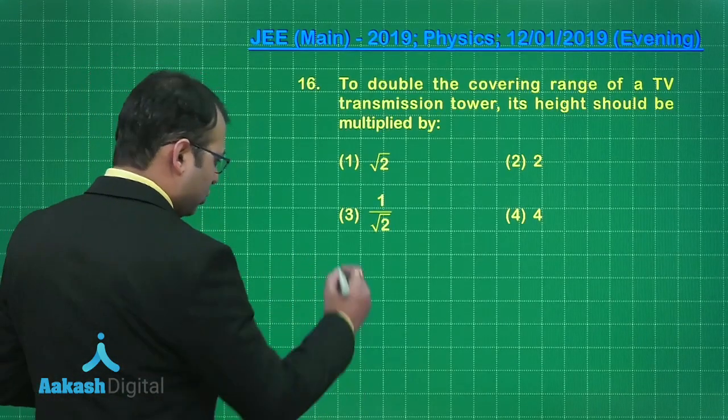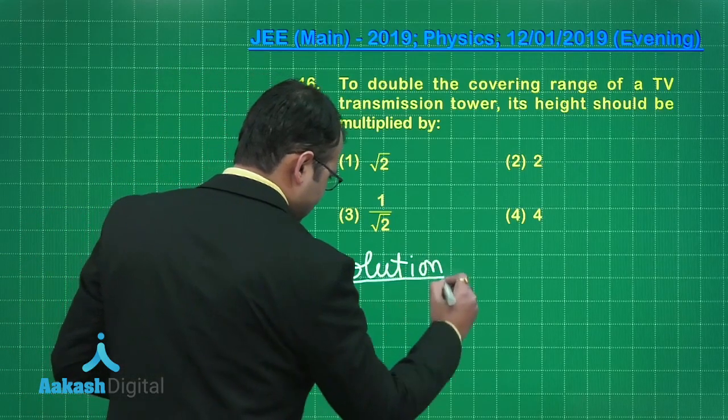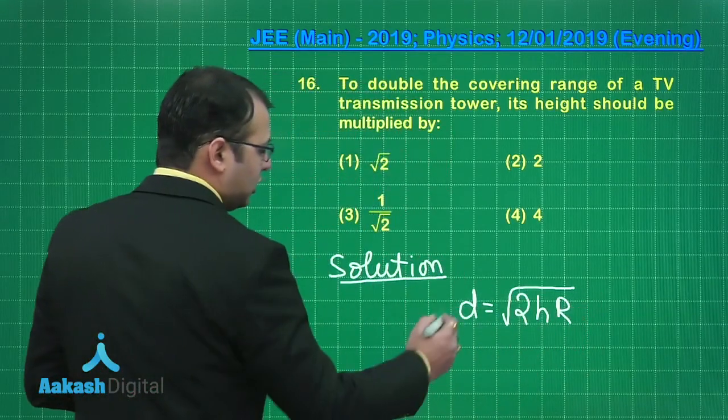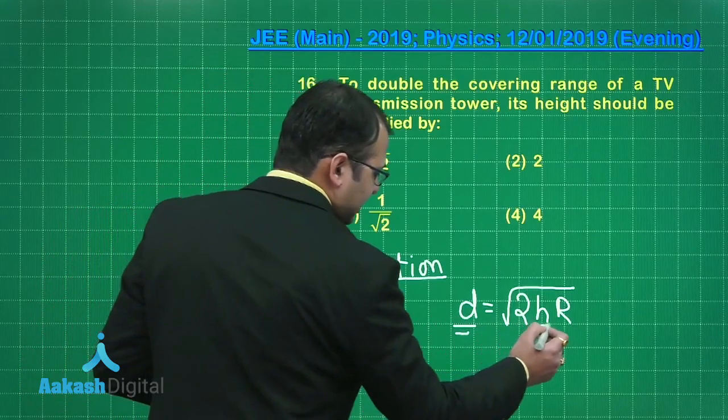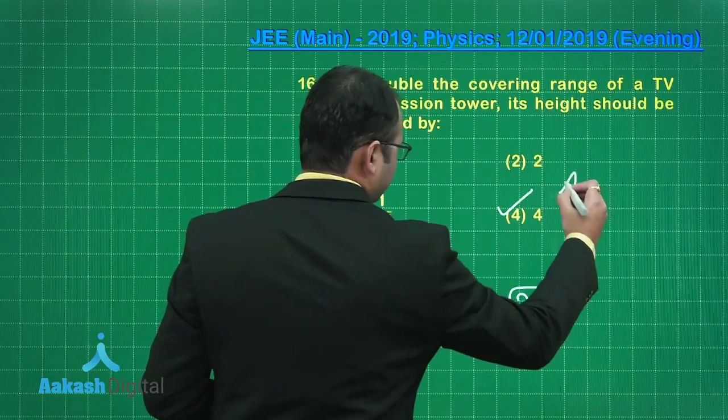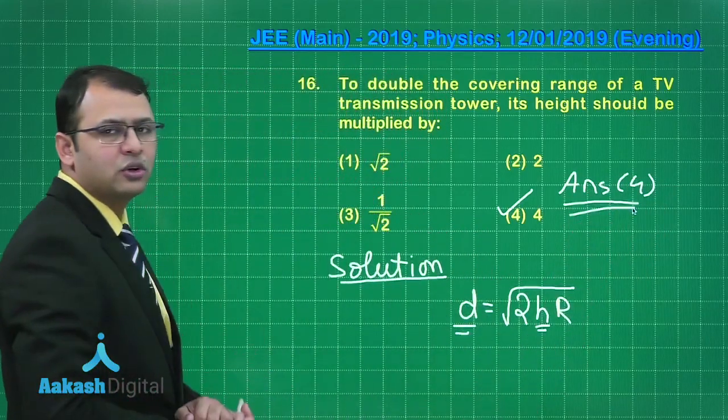As per the formula, the distance covered would be equal to square root of 2 times height of the TV tower times the radius. If I want to double this distance, definitely the height should be multiplied by 4. Answer is 4, right.